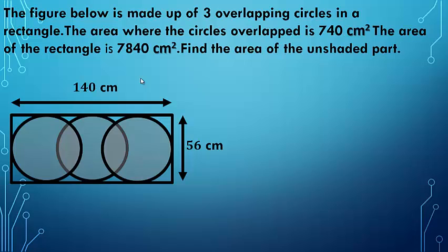The figure given below is made up of three overlapping circles in a rectangle. The area where the circles overlap is 740 centimeter square, and the area of the rectangle is 7840 centimeter square. Find the area of the unshaded part. We will find the area of the whole rectangle and then subtract the area of the shaded part. To find the area taken by the circles, we subtract the two overlap parts' area from the area of the three circles.